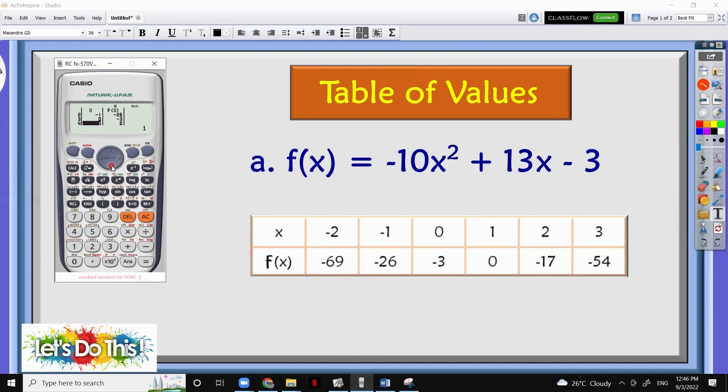We have 0 is negative 3, 1 is 0, 2 is negative 17, and 3 is negative 54. That's how to get our table of values using this calculator.